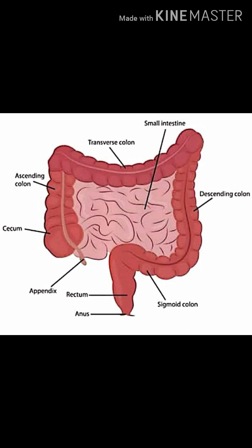Then, the pancreas secretes many pancreatic juices, which finally convert the proteins into amino acids, complex carbohydrates into glucose, and fats into fatty acids and glycerol.